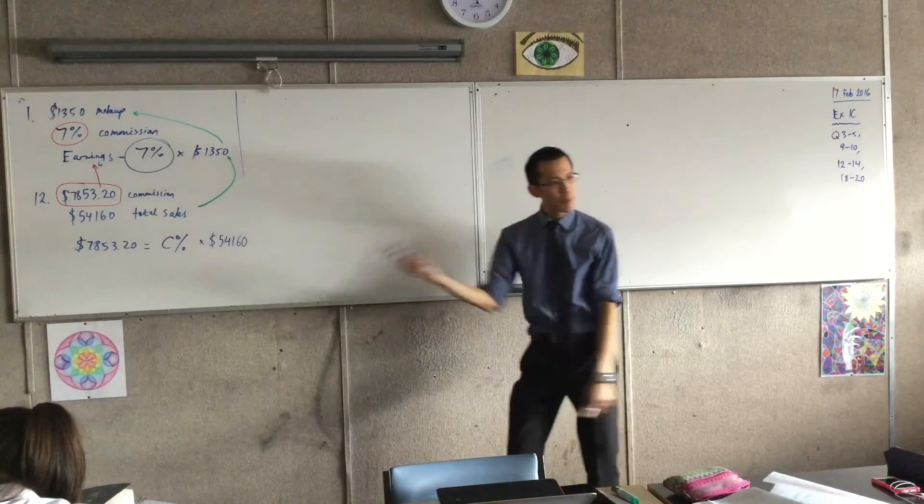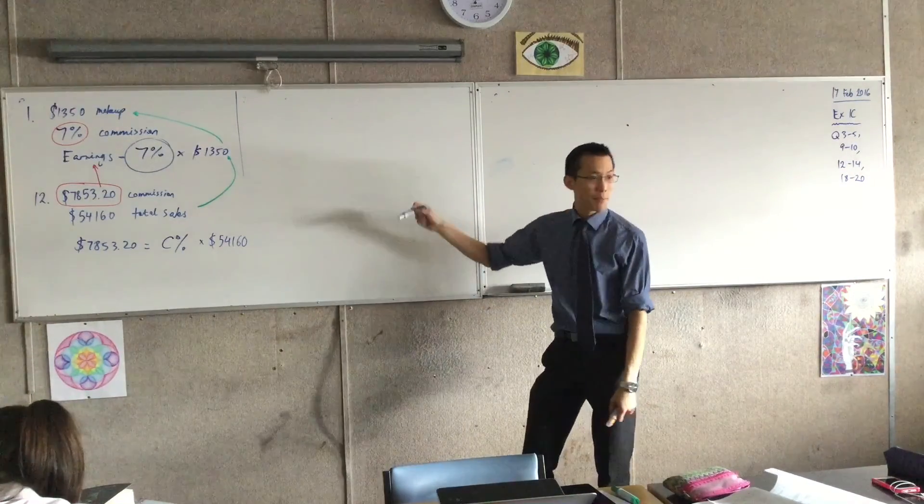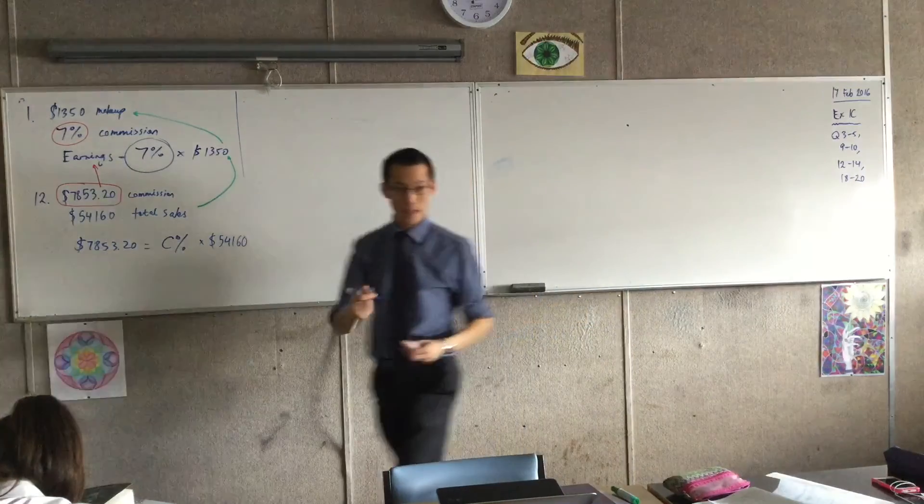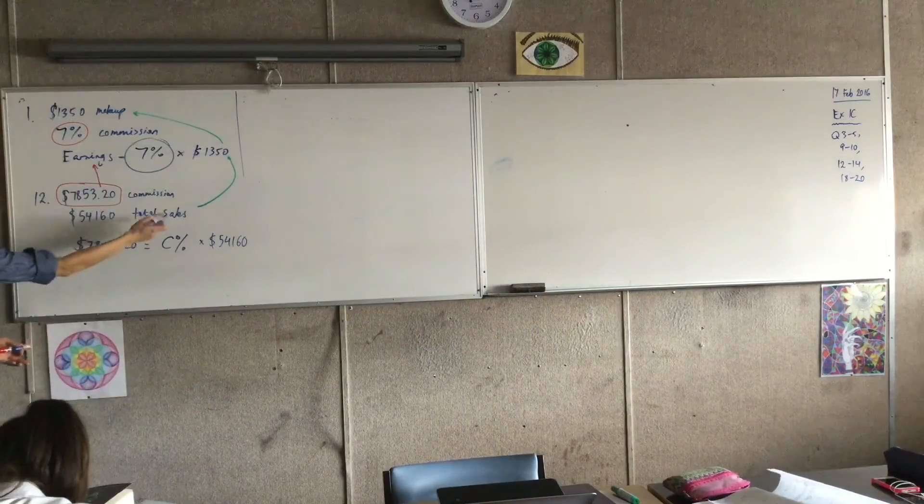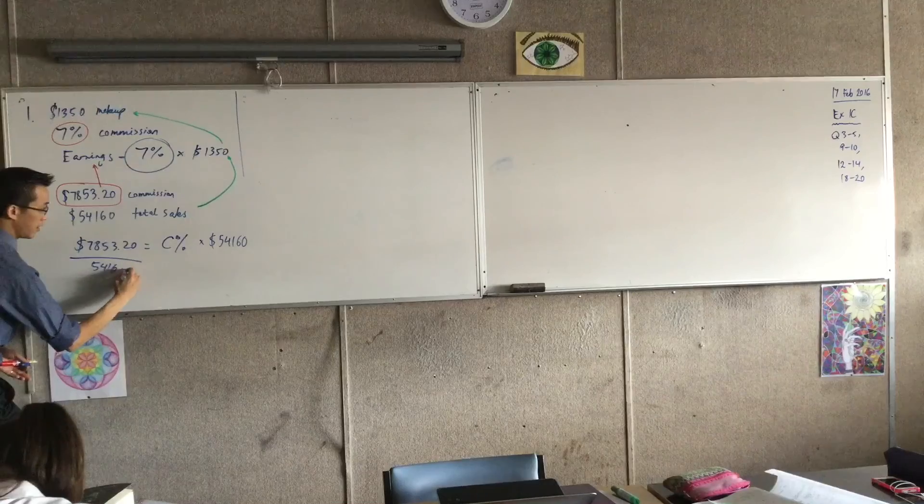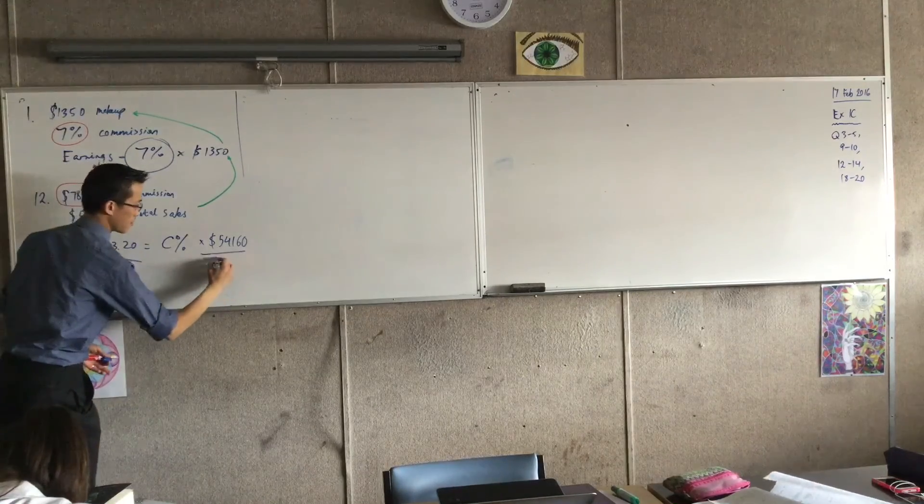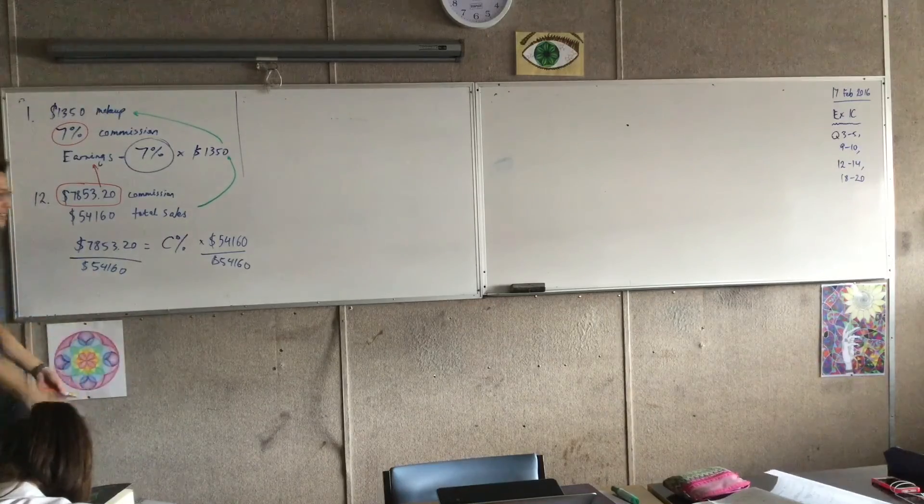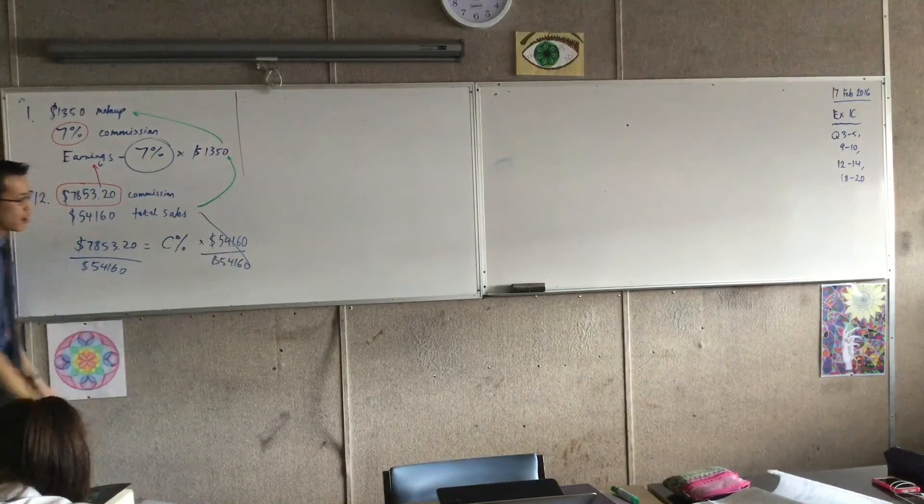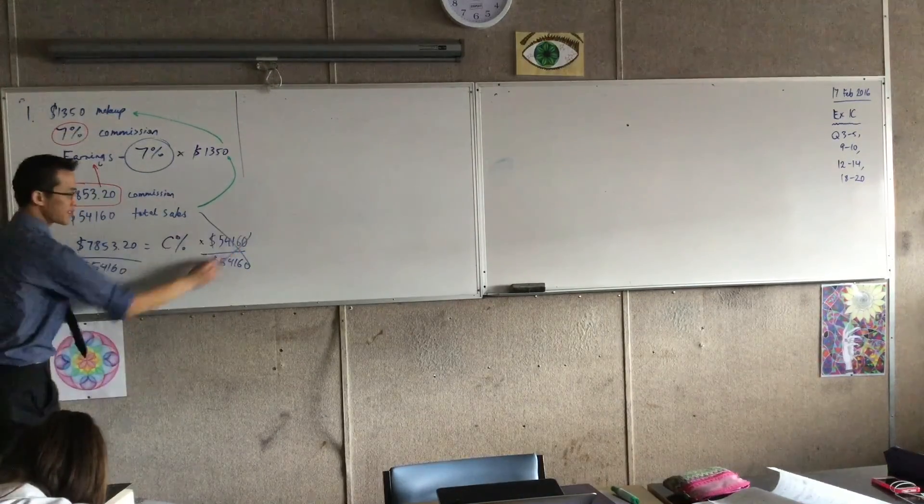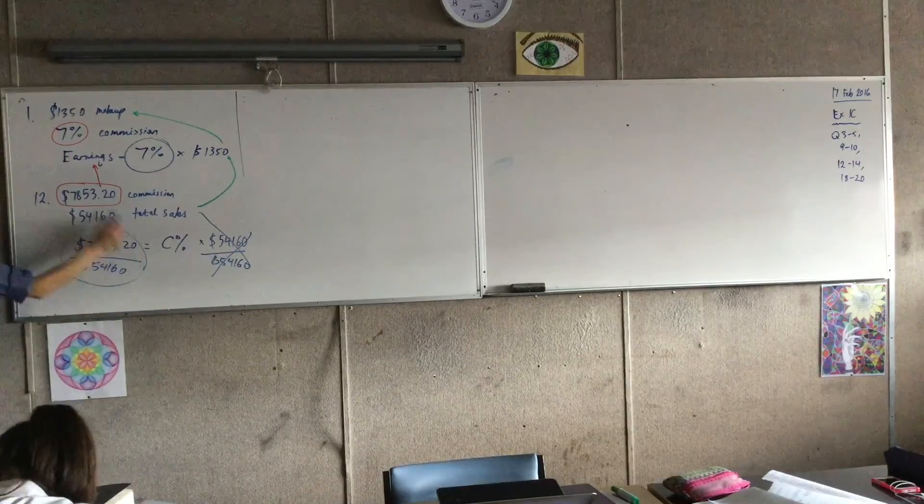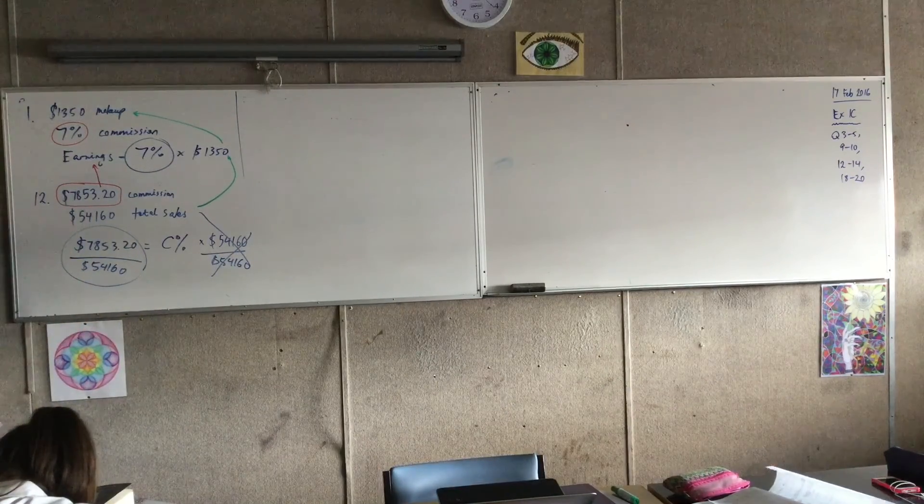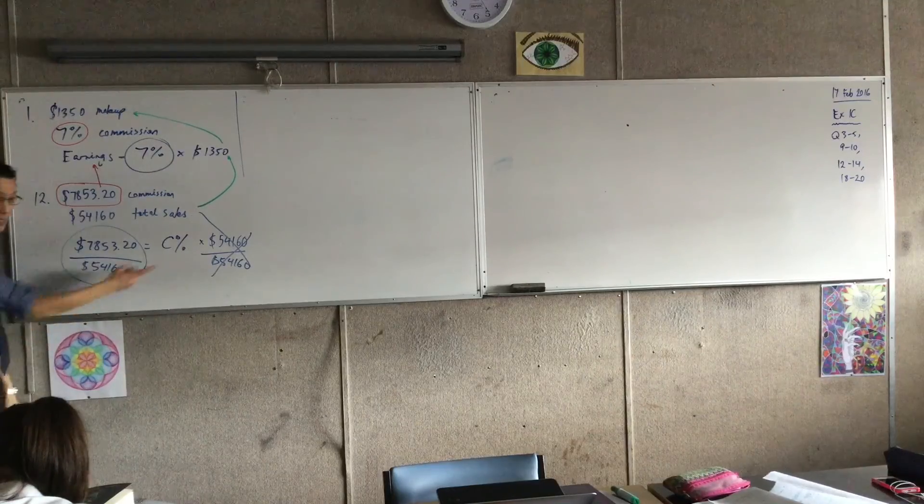Once you see me write this, which I'm just basing on the obvious questions you asked before, if I'm trying to solve for this, think of the equations you got before. What would I do to both sides to get C% by itself? Yeah, I'm going to divide by the sales amount, right? 54,160.